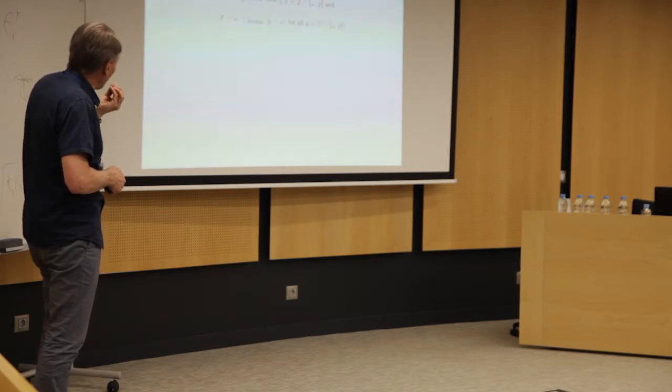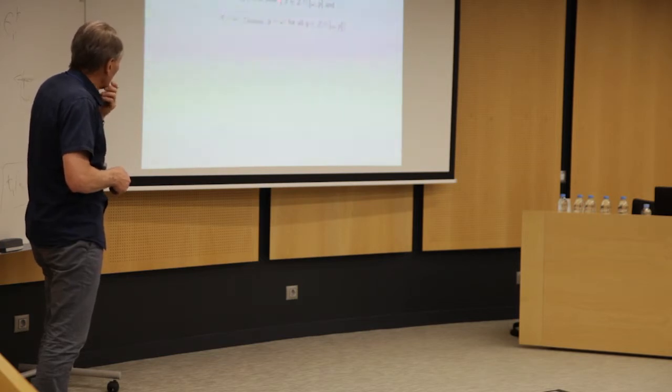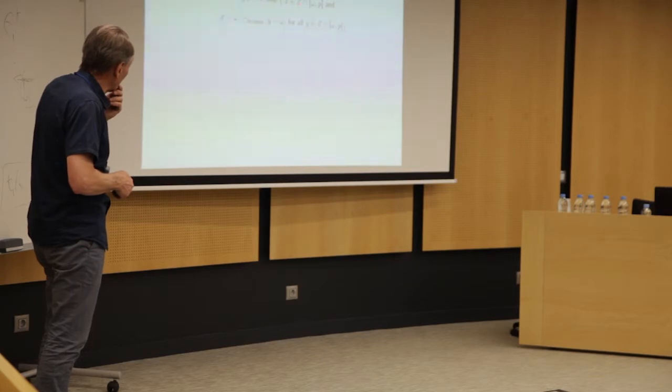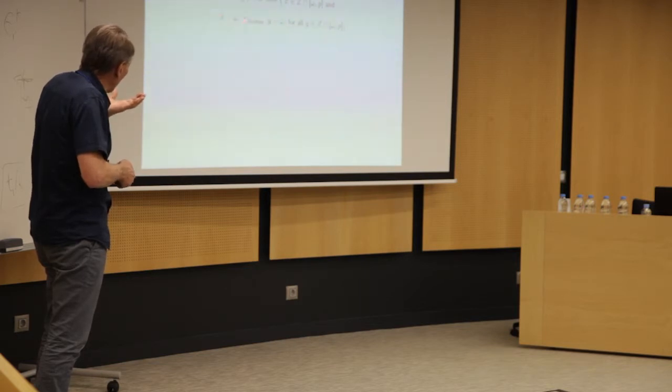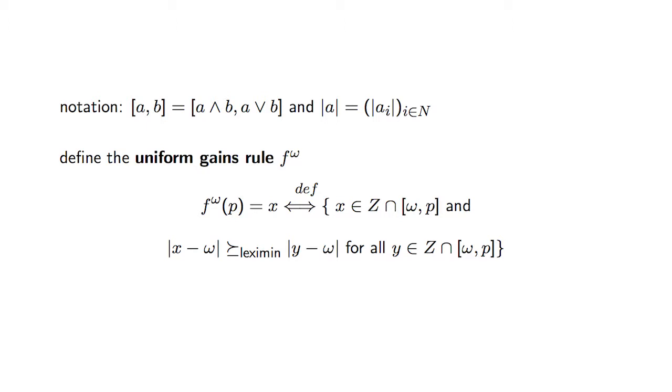So F_omega of P, P is the set of reported peaks. That's what the ideal that they want. And X is what they get. So X is going to be a feasible allocation in the set from omega to P. So it's important that for each person, I go from omega_i toward his or her peak, of course, because that's, I want to go away to improve upon omega. And in that set, I want that the vector of absolute benefits, x_i minus omega_i for each coordinate, is leximin maximal for all alternative ways. Okay? Right? So I'm equalizing the benefits as much as possible following the leximin.